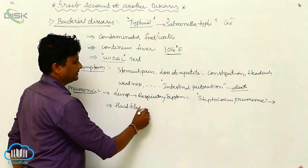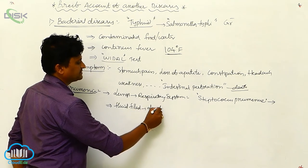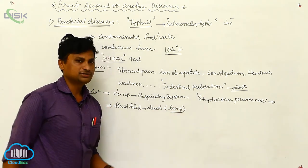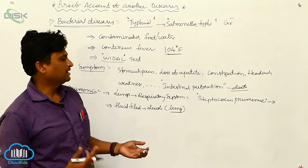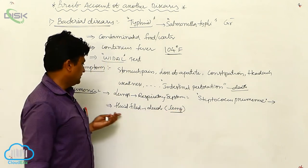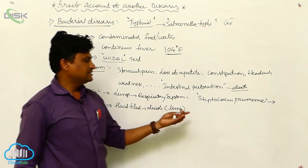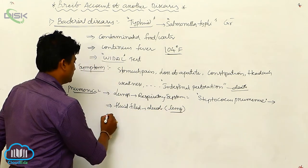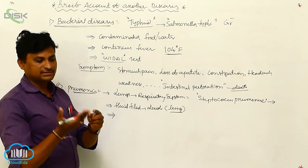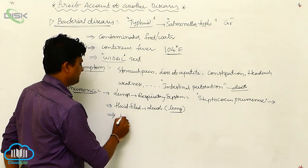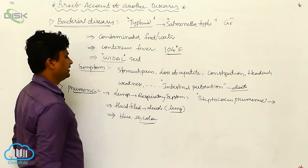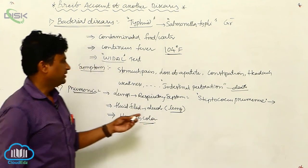In pneumonia, the alveoli of the lungs are filled with fluid, which breaks down respiratory movements and causes serious problems with respiration. A major identifying symptom is that the fingernails and eyes turn blue in color due to lack of oxygen.